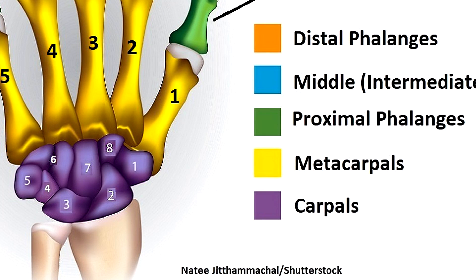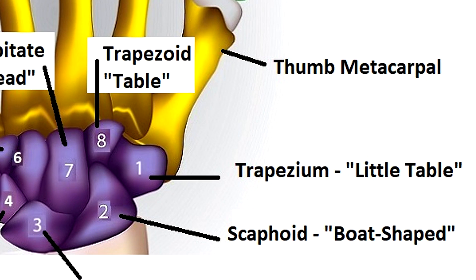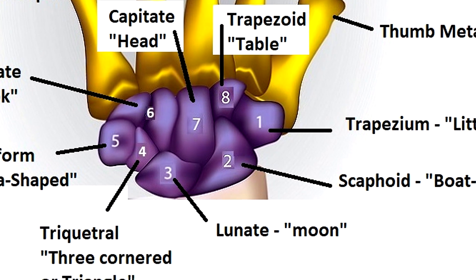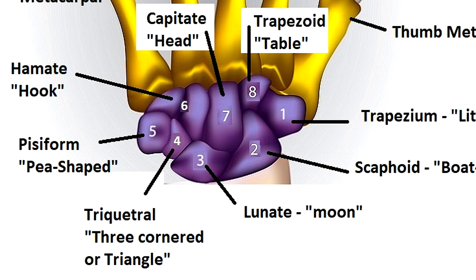The carpus or wrist area contains eight short wrist bones called carpals, named after Latin and Greek words meaning wrist. These bones have unusual names because they are named after ancient root words related to their general shape. For example: trapezium means little table, scaphoid means boat-shaped, lunate means moon, triquetrum means three-cornered or triangle, pisiform means pea-shaped, hamate means hook, capitate means head — one of the easiest to recognize as it sits right in the middle of the distal row, and thinking of decapitated helps you remember it — and trapezoid means table or four-sided.